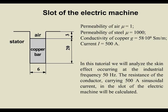Slot of the electric machine. Permeability of air is 1, permeability of steel is 1000, conductivity of copper is 58 times 10 to the sixth Siemens per meter, and current is 500 amps.